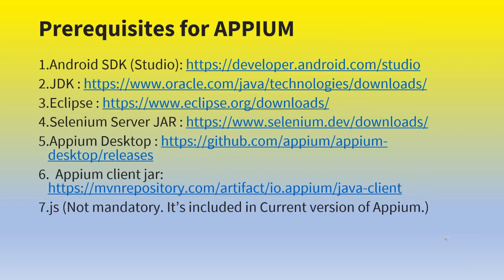Next, prerequisites for APM — what tools and software do we need? There is a link in the description box where you can download them. In the next video, we will download and install. There are 7 items: Android SDK, Android Studio, JDK, Eclipse, Appium Server JAR, Appium Desktop, and Node.js.